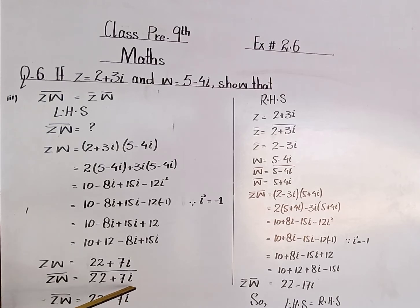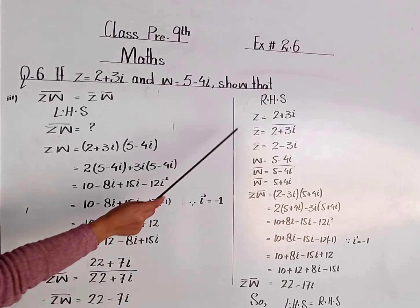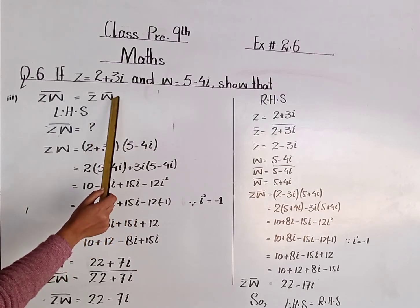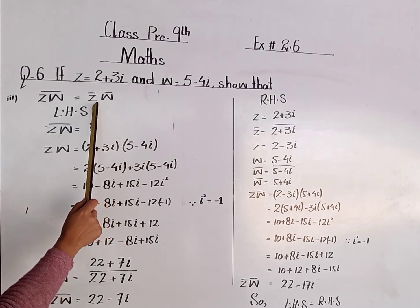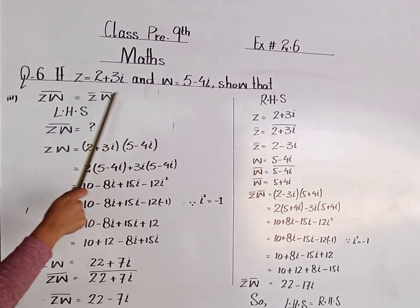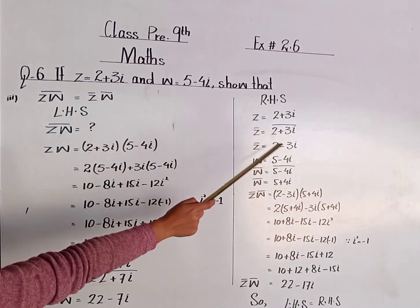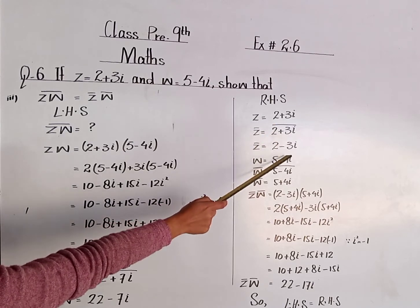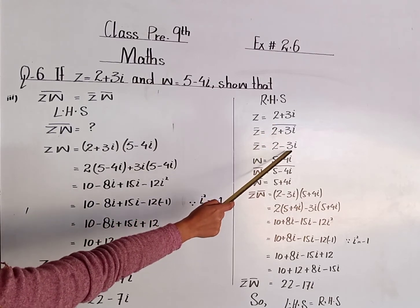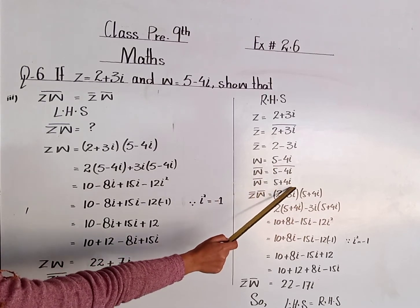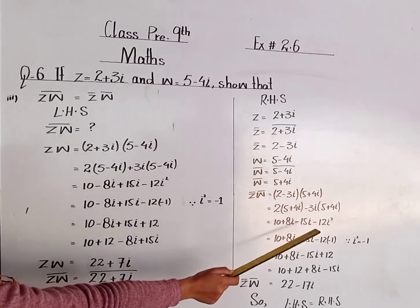In conjugate, just change the sign of the iota term or imaginary number. It becomes 22 minus 7 iota. Now the right hand side is conjugate of z into conjugate of w. So first of all we will find conjugate of z, then conjugate of w, and at the end find the product of both. Z is equal to 2 plus 3 iota, so conjugate of z is 2 minus 3 iota.